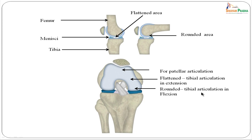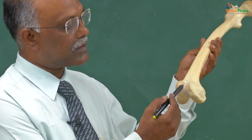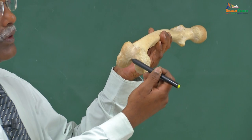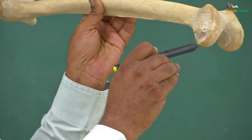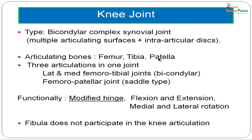Looking at the lower end of the femur again: this articular surface articulates with the patella, this flattened articular surface articulates with the tibia in extension, and this rounded area of the femoral condyle articulates with the tibia in flexion. The knee joint is a bicondylar complex synovial joint — complex because there are intra-articular discs, and bicondylar because the medial and lateral condyles of the femur articulate with the corresponding condyles of the tibia. The articulating bones are the lower ends of the femur, the upper ends of the tibia, and the patella.